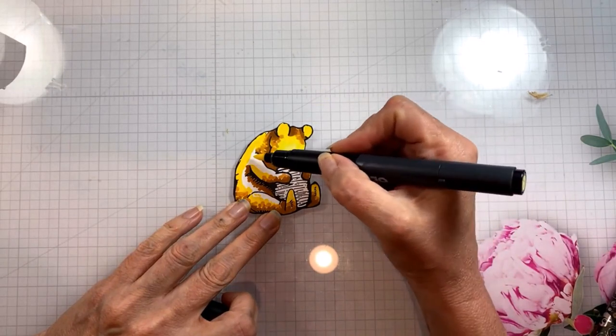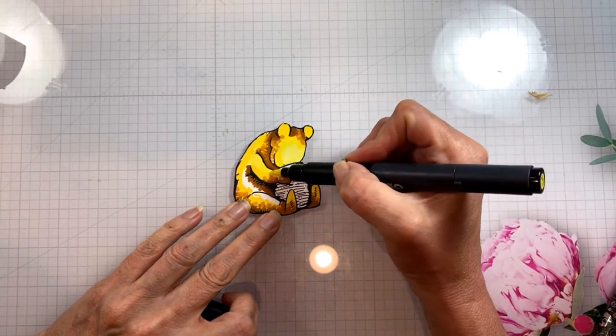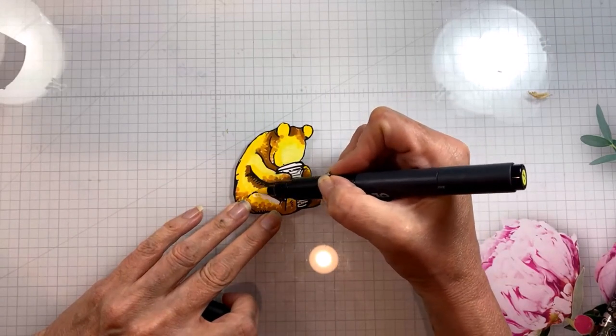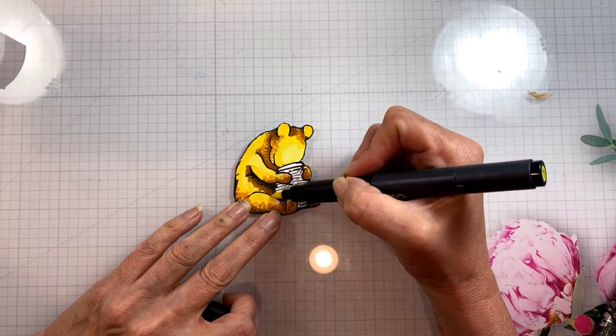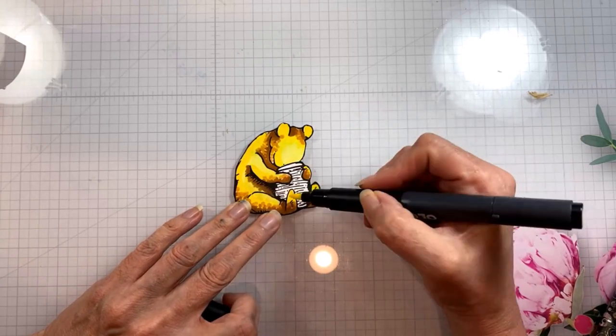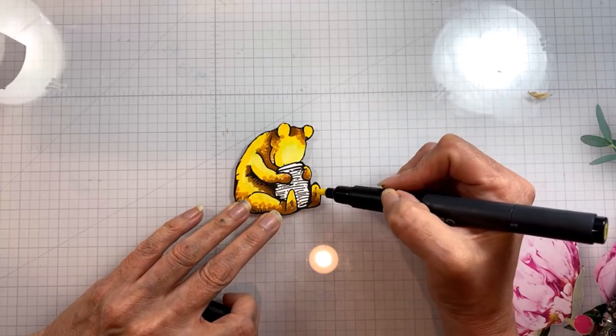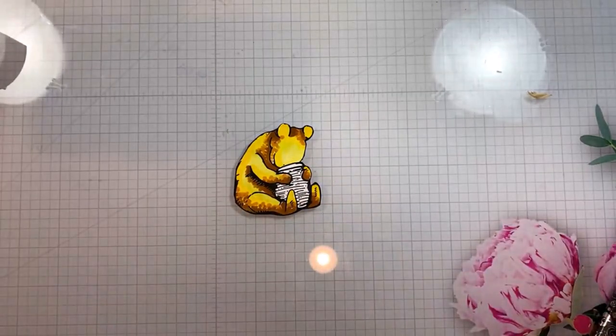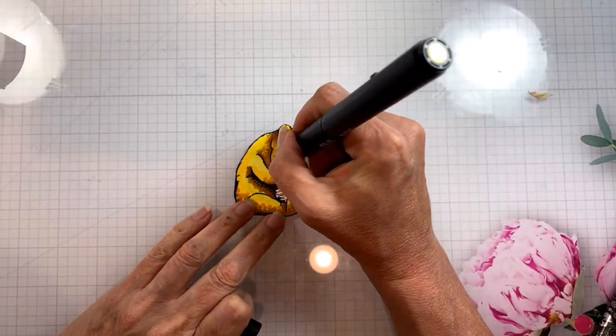Now I have even a paler yellow to do the highlights with. There isn't a huge tonal difference here because I just wanted the illusion of a little bit of light on these parts of the bear, so it's just a shade lighter than the lightest color of yellow that I had used for the teddy bear texture.